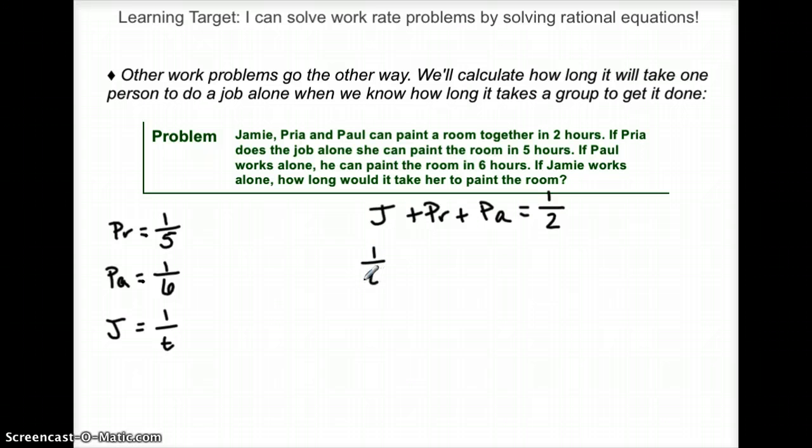1 over T plus Priya was 1 over 5, plus Paul was 1 over 6. And this combined is a half.